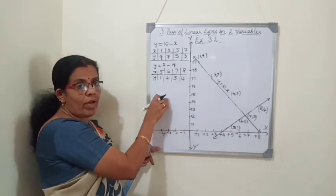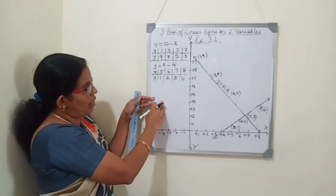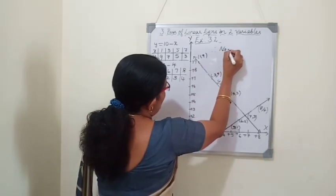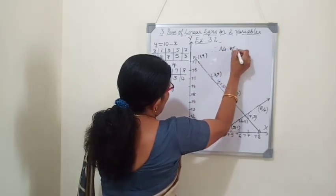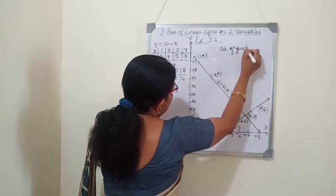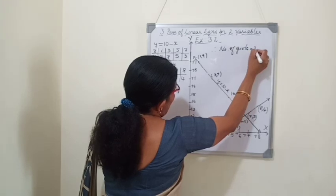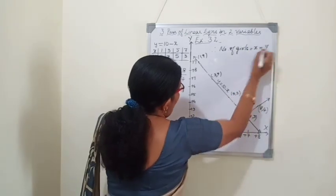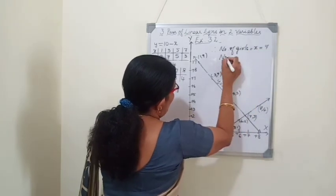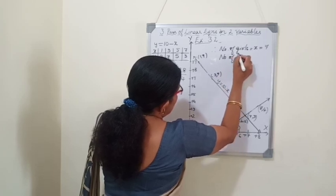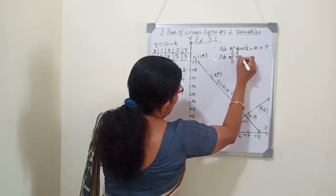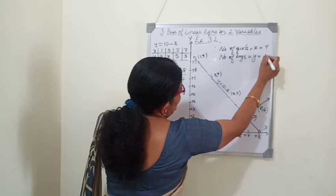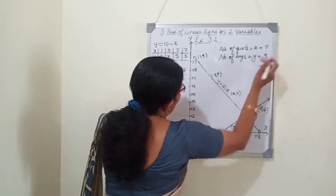Therefore, number of girls equals x equals 7, and number of boys equals y equals 3. Through the graph, we have found the number of girls and number of boys.